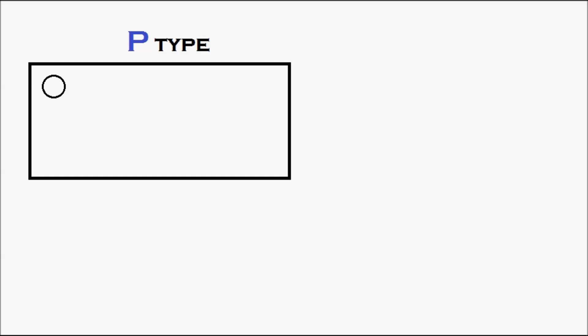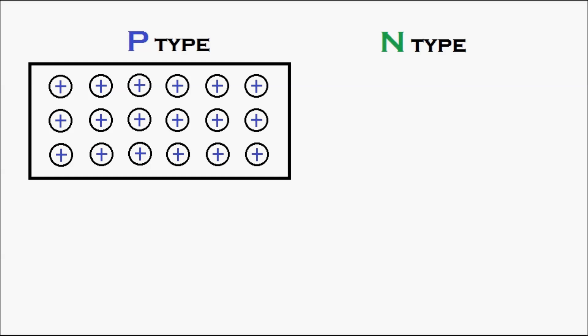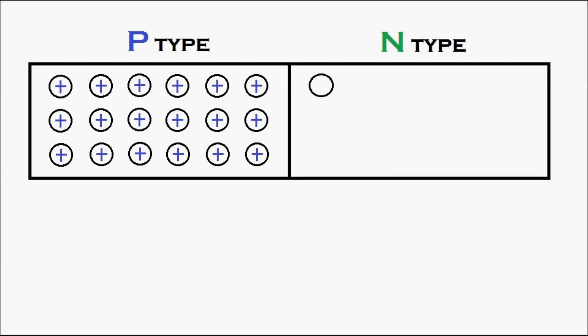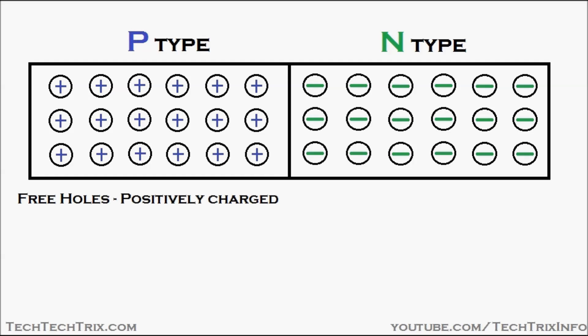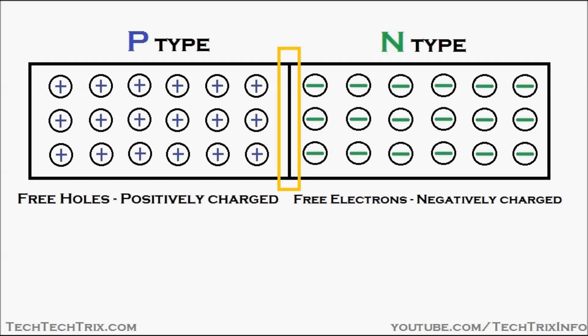The P-type semiconductor has holes which are positively charged, and the N-type semiconductors have electrons which are negatively charged. Free holes which are positively charged are available in the P-type, and free electrons which are negatively charged are available in the N-type. This is the region where the P-type and the N-type join — the junction which is called the PN junction.